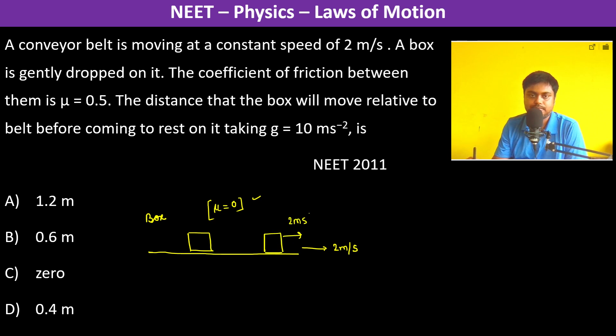This is the final velocity of 2 meters per second. After this, friction stops working because both have the same velocity, so there is no relative motion. The coefficient of friction μ is 0.5.